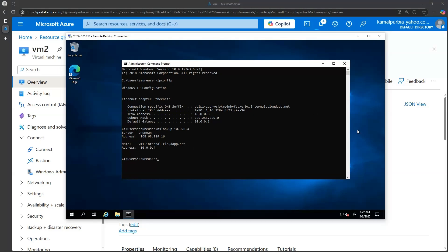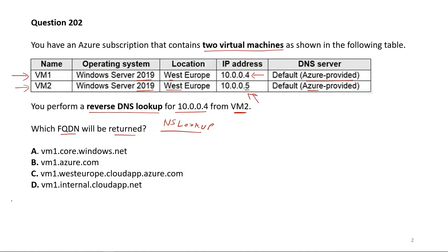Let's go back to the question. Therefore, option D — vm1.internal.cloudapp.net — is the correct answer. Let's go to the next question.